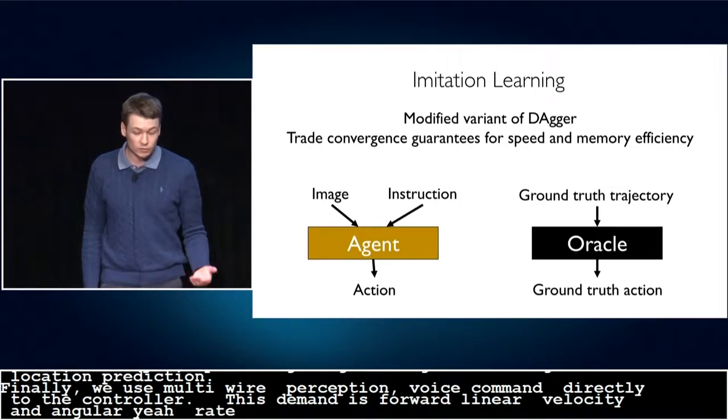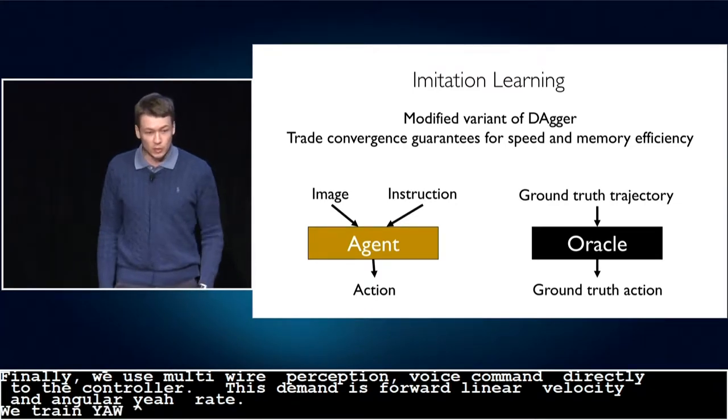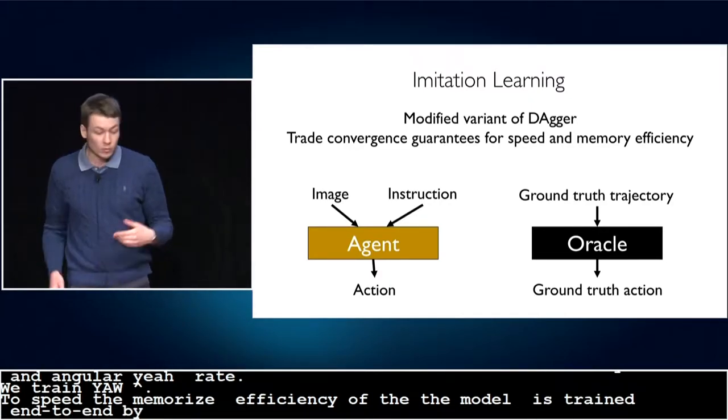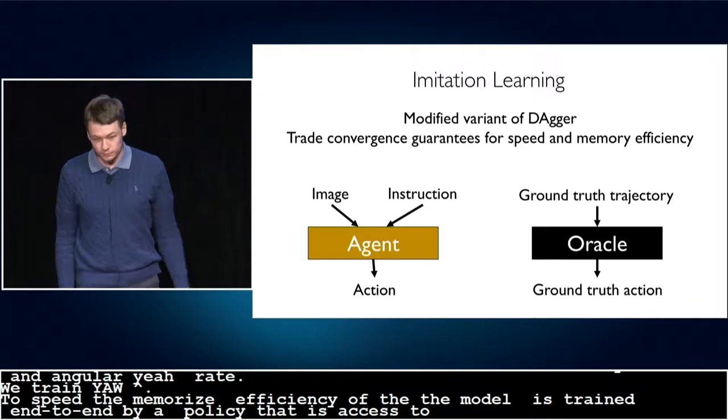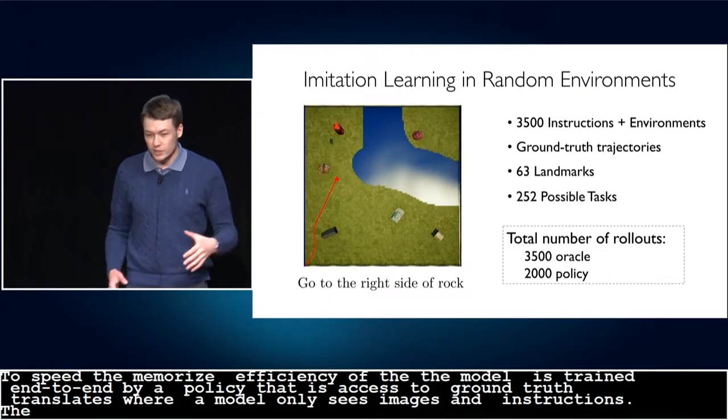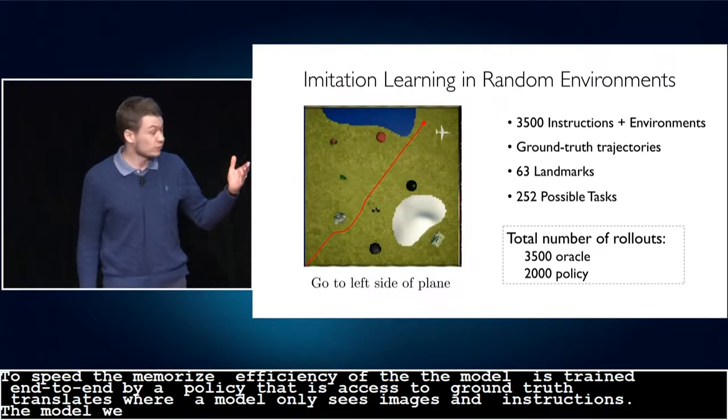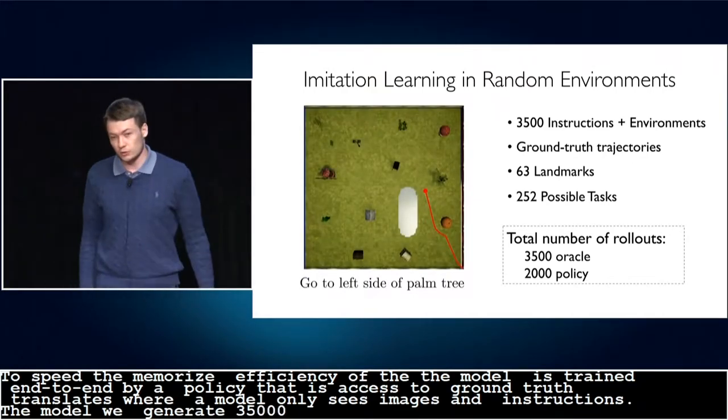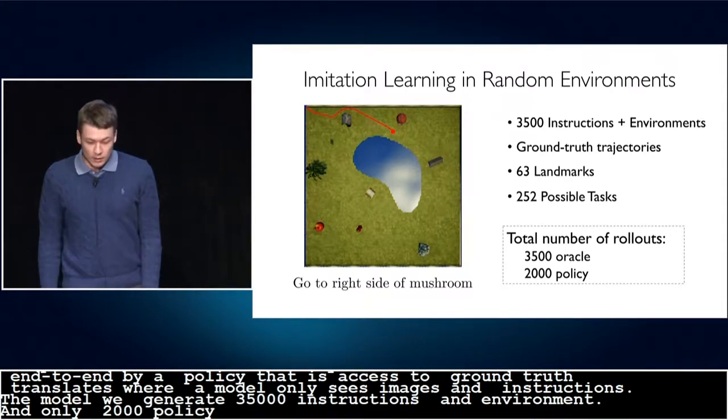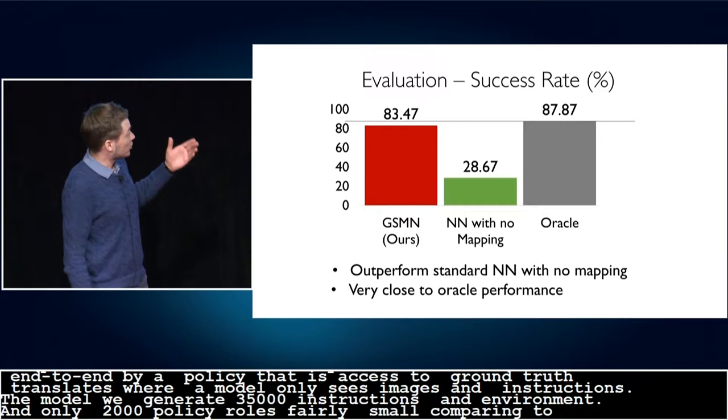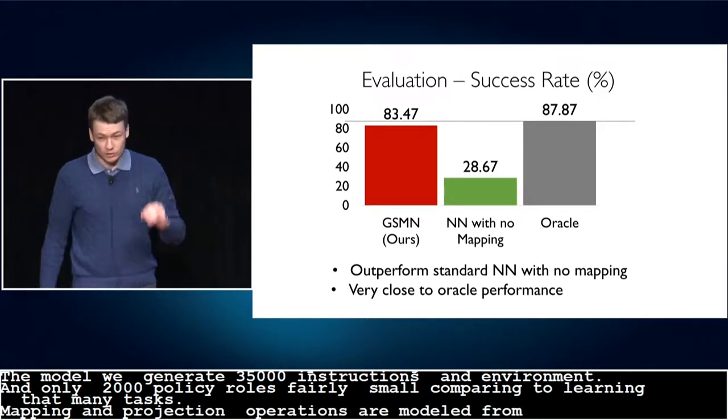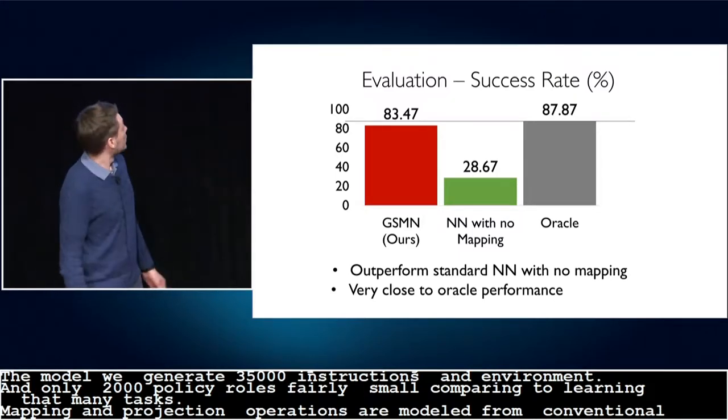We train our model using imitation learning, specifically a variant of the Dagger algorithm that trades convergence guarantees for speed and memory efficiency. The model is trained end-to-end by imitating an Oracle policy that has access to ground-truth trajectories, while our model only sees images and instructions. To evaluate our model, we generate 3,500 synthetic instructions, each in a random environment. We collect 3,500 Oracle rollouts and only 2,000 policy rollouts, which is a fairly small number for learning 252 different possible tasks. We find that the mapping and projection operations are what allow our model to outperform conventional neural network architectures while almost reaching the Oracle performance.